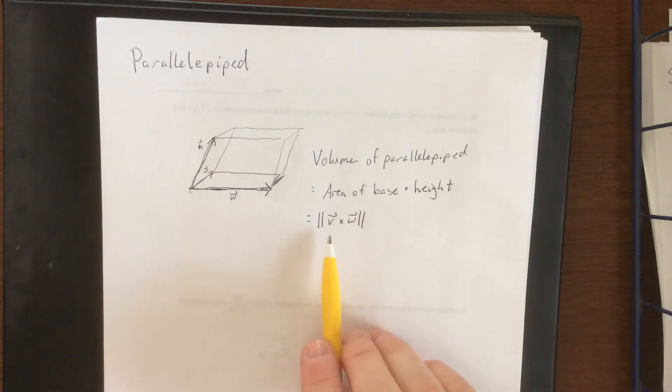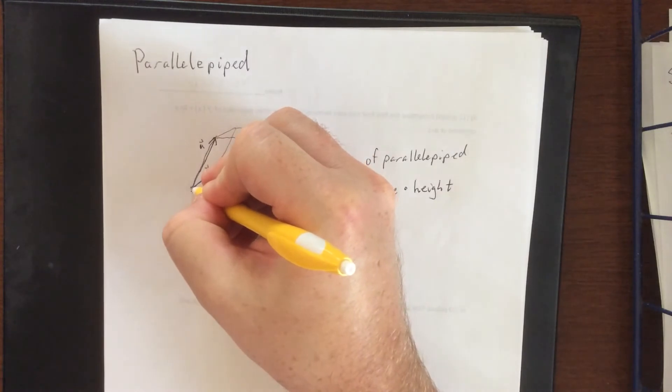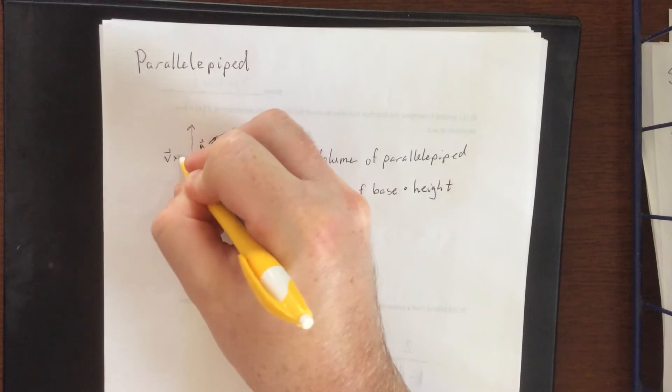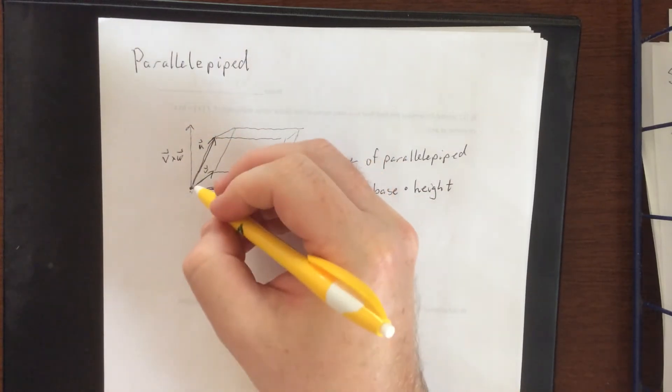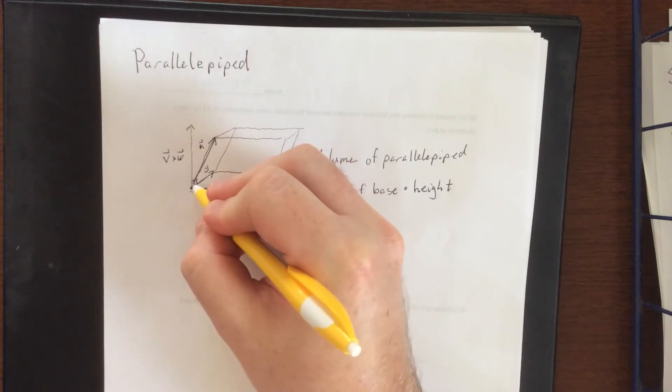Now when I do find what that vector is, what we're going to wind up with is something that is orthogonal to both of them. So v cross w would be orthogonal to v as well as orthogonal to w.